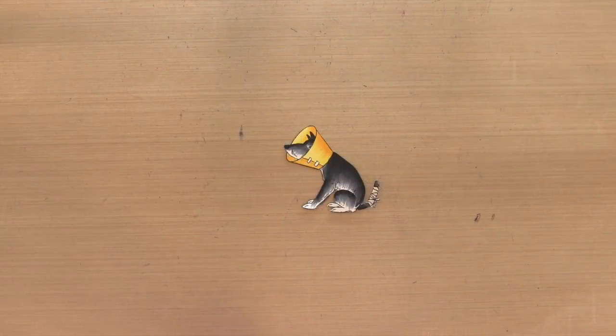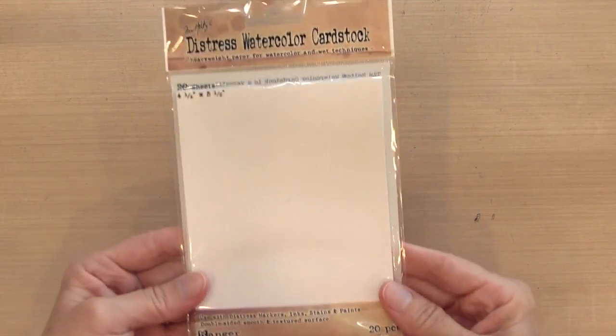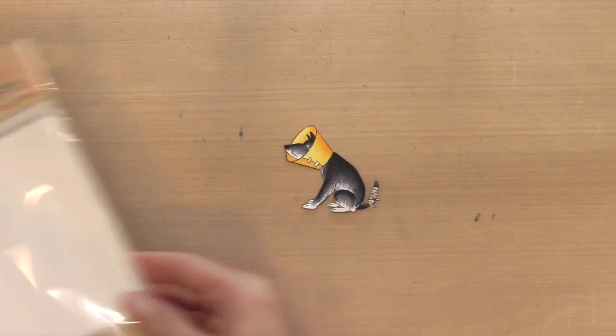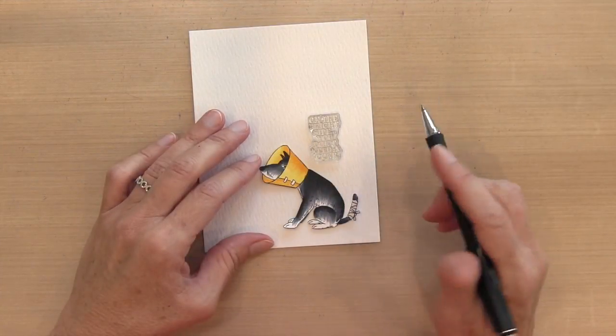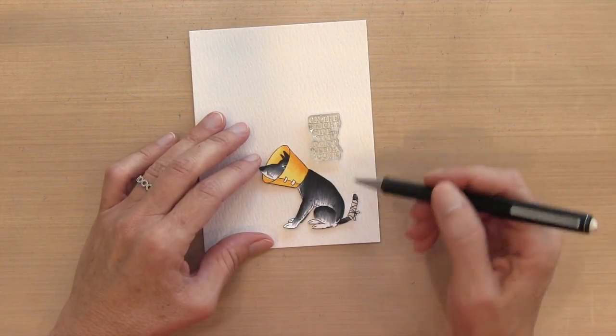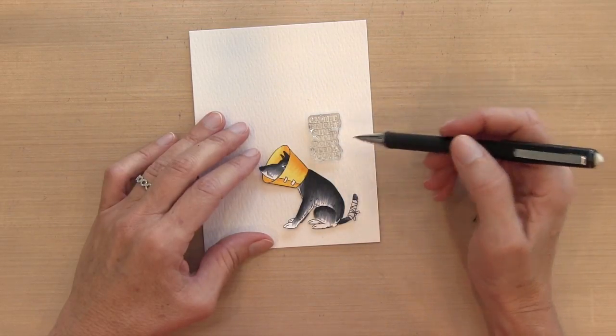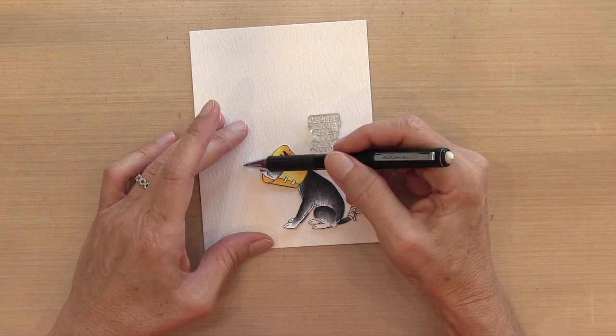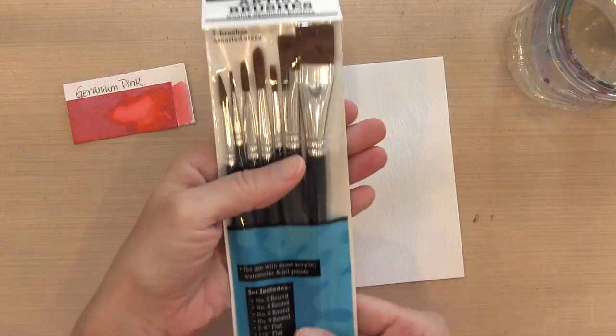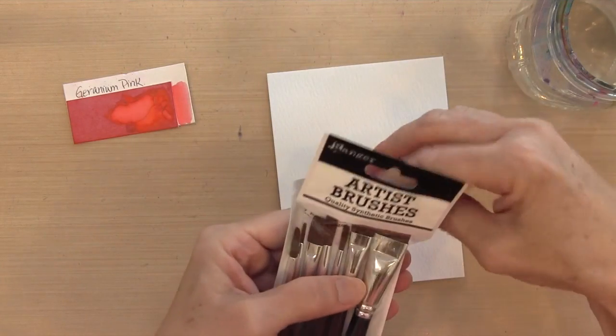I'm going to cut this guy out with a scissor. And now I'm going to work on the background. I'm going to use my Distress watercolor cardstock. It comes in A2 size. I'm using the textured side. I'm putting a top and bottom right and left with my dog and my sentiment position, so I know how much I need to watercolor.